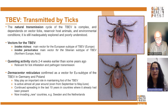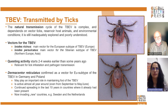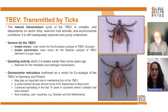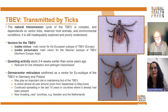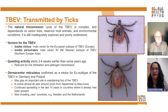In Europe, Dermacentor reticulatus adults are active from September to May/June — even in winter — and are able to transmit TBE virus also during the winter. Together with Ixodes ricinus and Ixodes persulcatus, which are active from March to October, TBE virus transmission may occur all year round. Additionally, Ixodes ricinus and Ixodes persulcatus activity has changed in recent years, starting two to four weeks earlier than before, meaning earlier transmission of TBE virus in those regions.